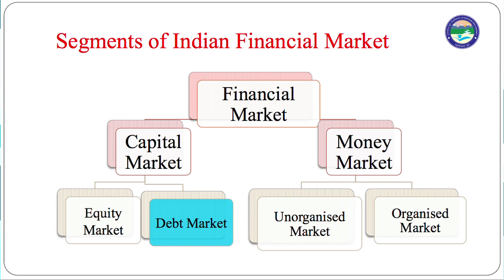Capital market and money market. Money market has two segments: unorganized market and organized market. This section we have already done in my previous sessions on financial market and money market instruments. On the other hand, there is a capital market, which has two segments: equity market and debt market. Equity market is a market where shares are issued and traded in a stock exchange, and this is the riskiest market. Our today's session is completely devoted on the debt market.